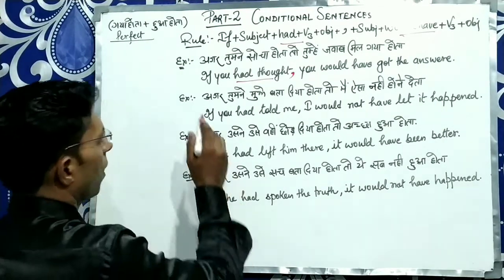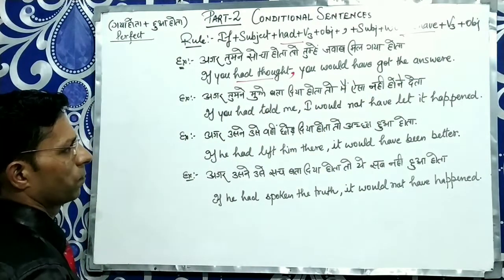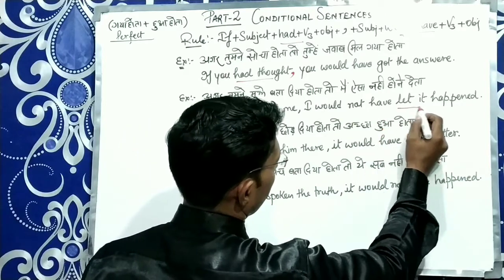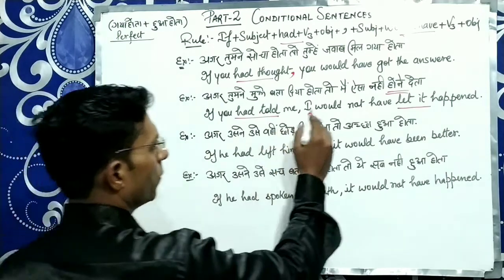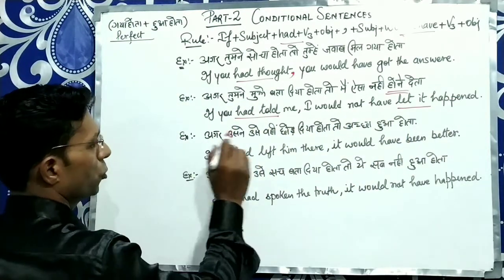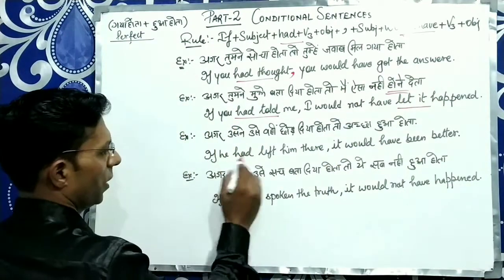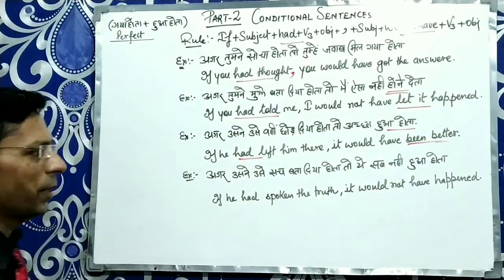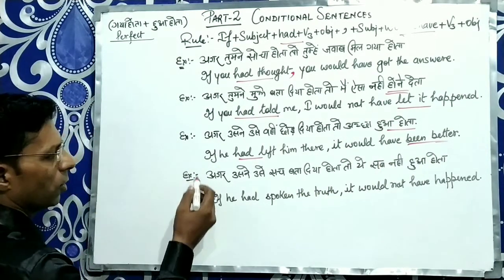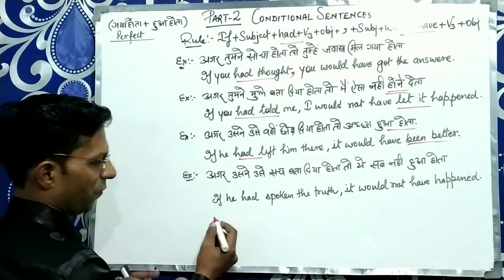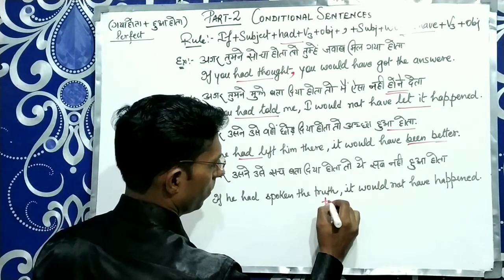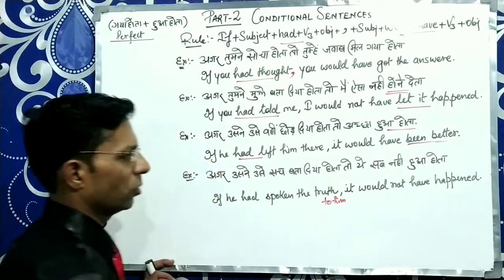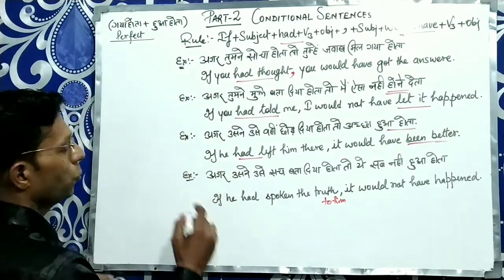यह बहुत पुराना काल है। अगर तुमने मुझे बता दिया होता तो मैं ऐसा नहीं होने देता — If you had told me, I would not have let it happen. अगर उसने उसे वहीं छोड़ दिया होता तो अच्छा हुआ होता — If he had left him there, it would have been better. अगर उसने उसे सच बता दिया होता तो ये सब नहीं हुआ होता — If he had spoken the truth to him, it would not have happened.